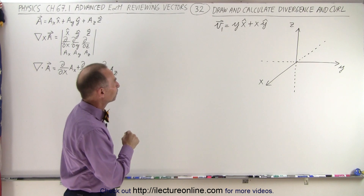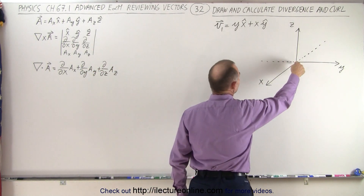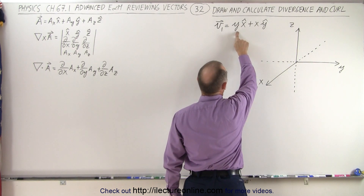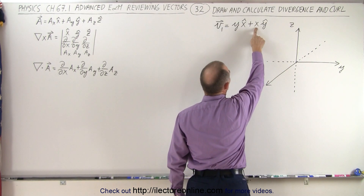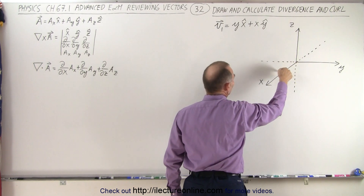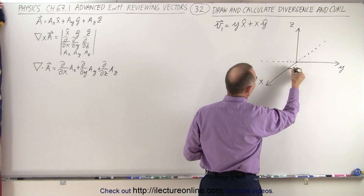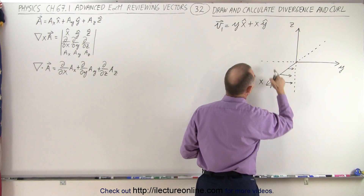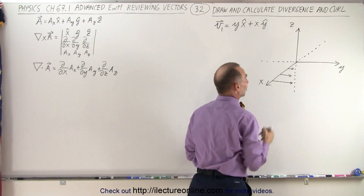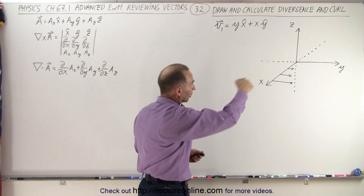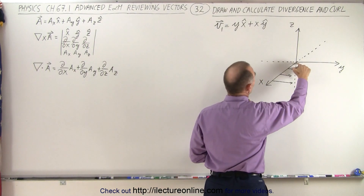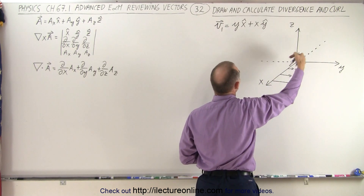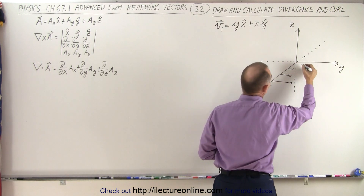How do we draw that? Let's move along the x-axis, which means y is equal to 0, so this will stay 0. And then x will increase in the y-direction as I move along the x-axis, which means that initially I'll have a small vector this way, and the vector will get bigger and bigger in the positive y-direction as x gets bigger. So that's what happens along the x-axis.